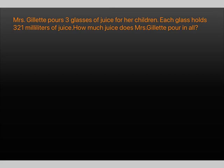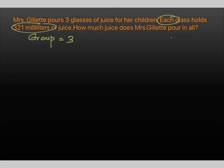First let's see what information is being given. Mrs. Gillette is pouring juice — she is giving three glasses of juice, so we know that the number of groups is three. Then 'each glass holds 321 ml' — 'each' means the size of one group. So the size of one glass or one group is 321 ml of juice.